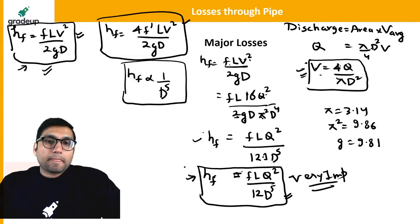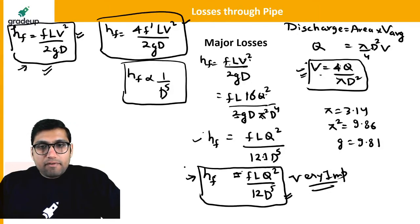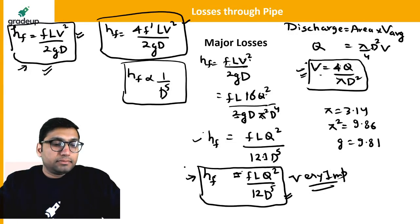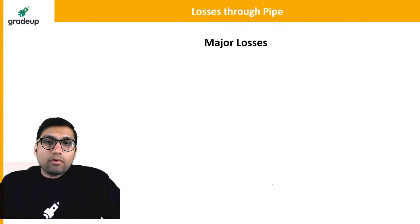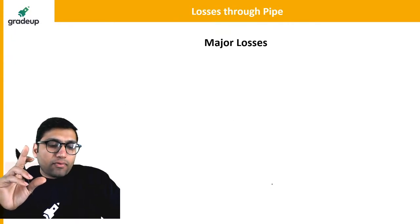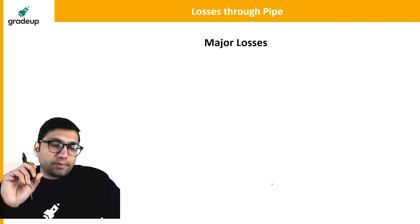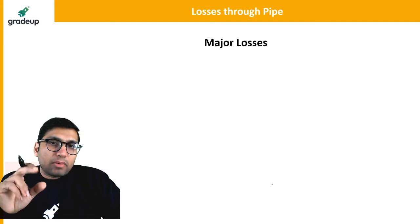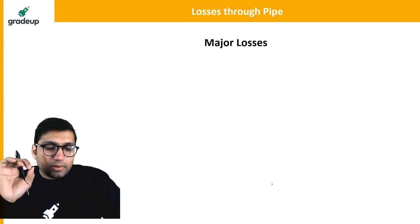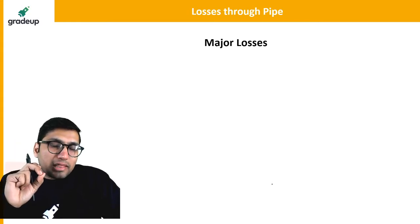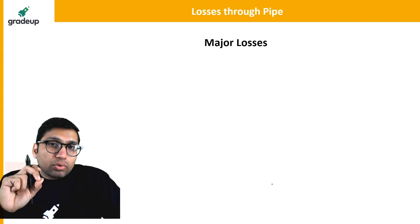Is it clear to everyone? So the Darcy-Weisbach equation gives us two important forms: the formula in terms of velocity, HF = F·L·V²/(2g·D), and the formula in terms of discharge, HF = F·L·Q²/(12·D⁵). There is one more formula — Chezy's formula — which I told you is used to find major head loss due to friction for open channel flow.